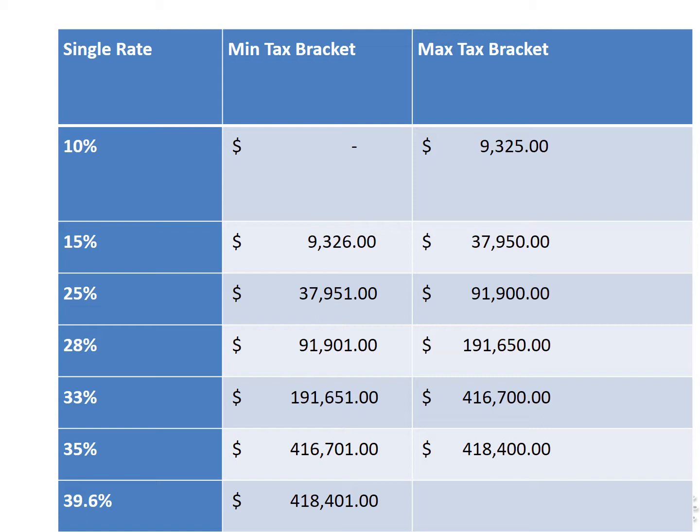When we talk about taxes, there are two tax rates we need to think about: your marginal tax rate and your effective tax rate. The marginal tax rate is the tax rate you pay on each additional income earned once you reach a certain threshold. For example, looking at a table, you can see if I earn $9,326, I'll be taxed 10% for the first $9,325 and 15% on the next dollar.